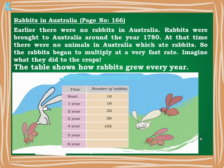Looking at the table: starting number was 10, next year it became 18, then 32, then 58 — the population kept increasing like this. A few questions are given on this.